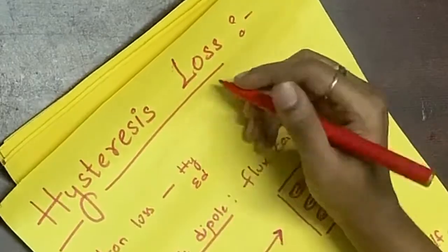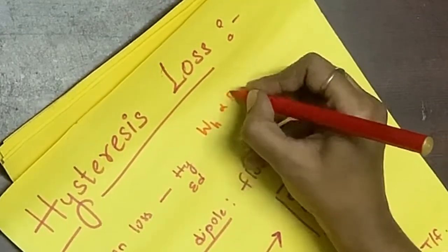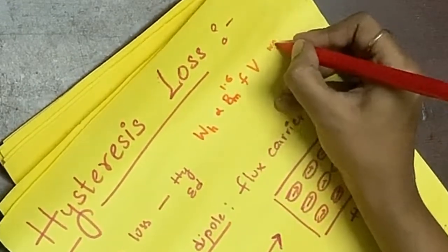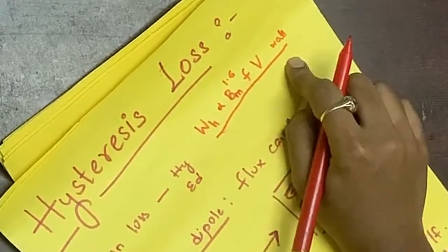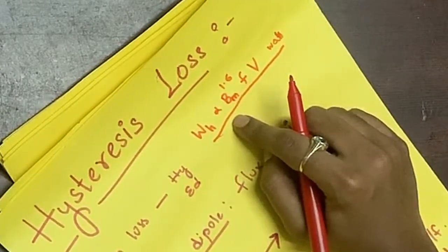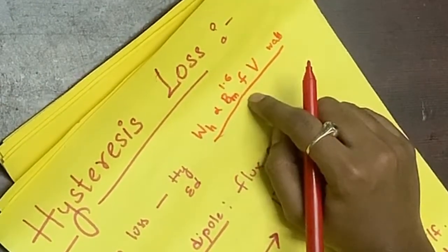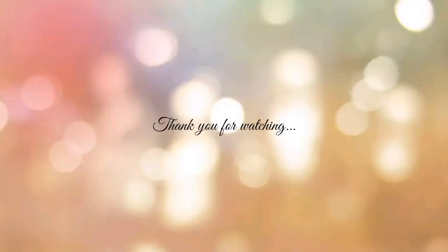The hysteresis loss is given by Steinmetz's law, where Bm is the maximum flux density, V is the volume of the material, and f is the frequency of magnetization. That's all about hysteresis losses. If you have any doubts, comment below. If you found this video useful, give it a thumbs up and share it with your friends. Thank you for watching.